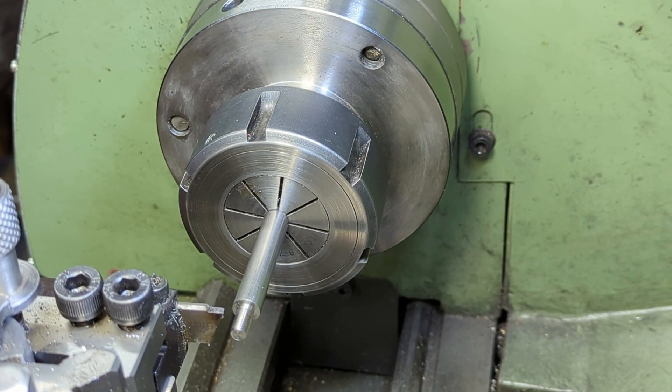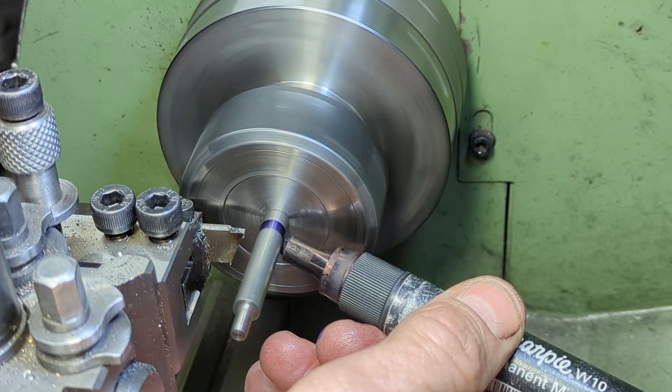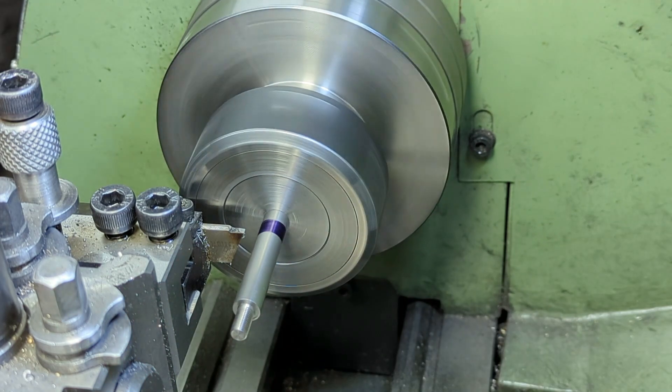To cut the slot, I'll use an old parting off tool which I've ground down to 2mm width, and then I apply some sharpie to help me find the workpiece.